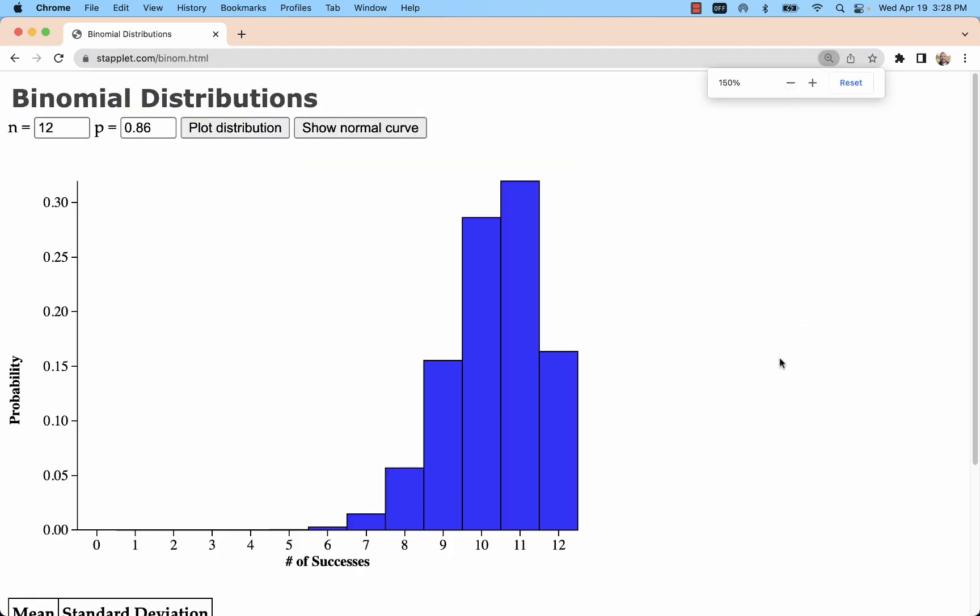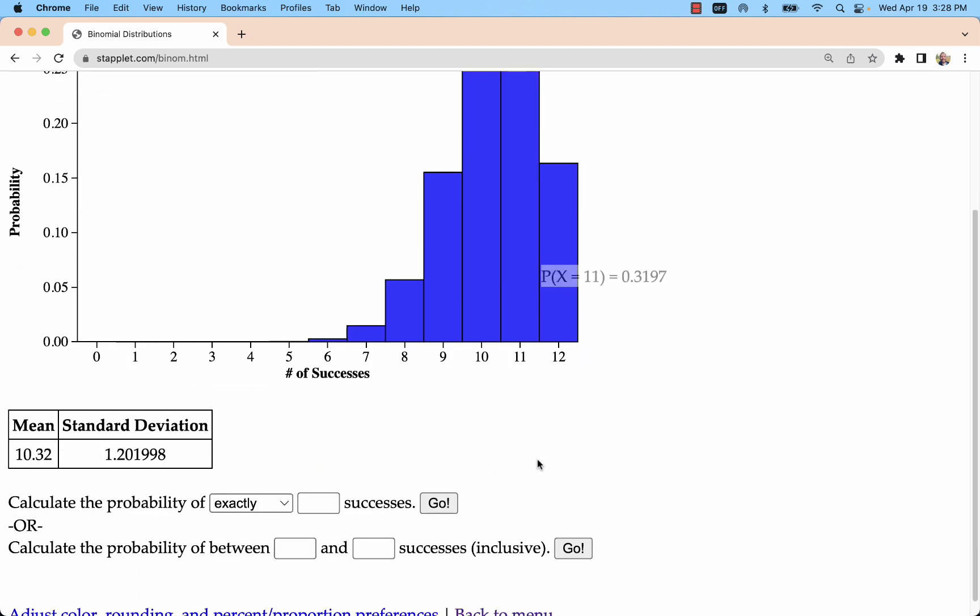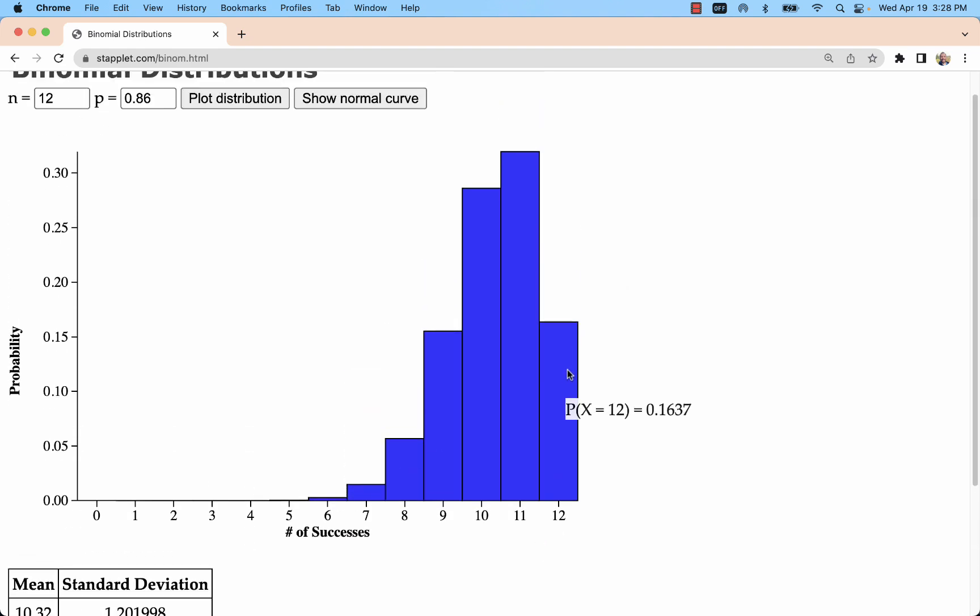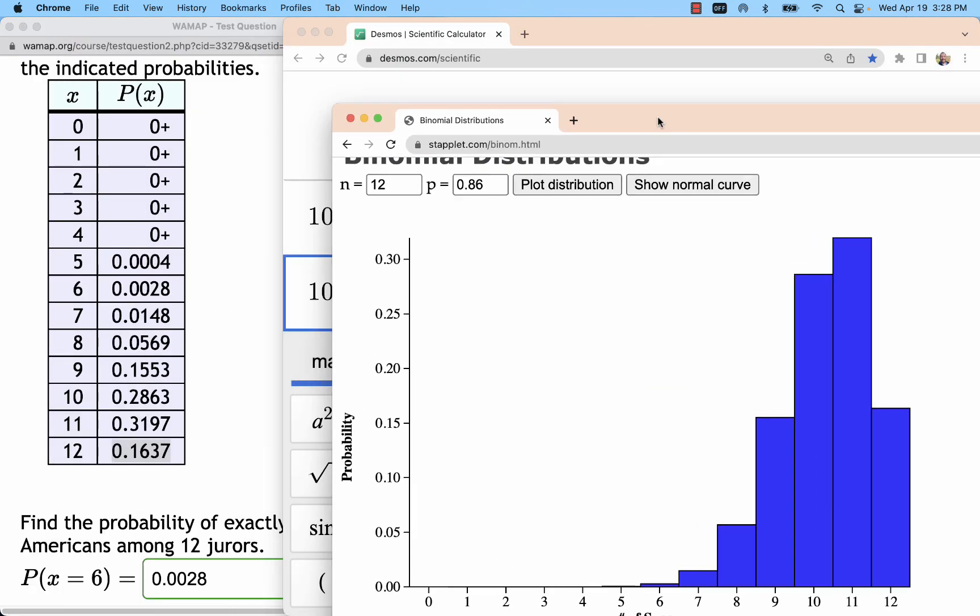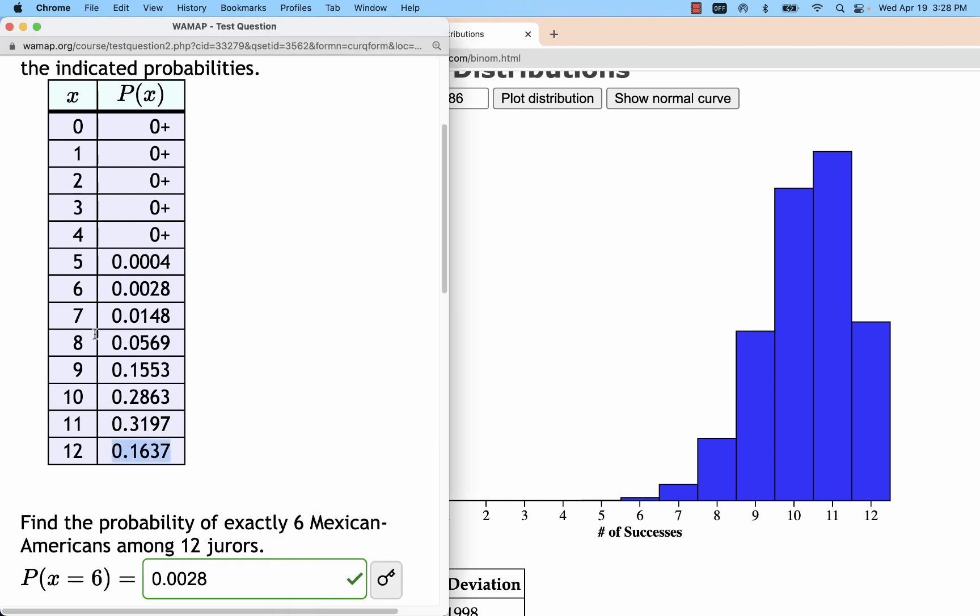And what I should see is a very similar, if not identical, graph. It comes down to the rounding a little bit. But you'll see those same numbers: 1, 6, 3, 7, 3, 1, 9, 7, 2, 8, 6, 3. And those are those same numbers that we saw in that table. So that's how it was generated.